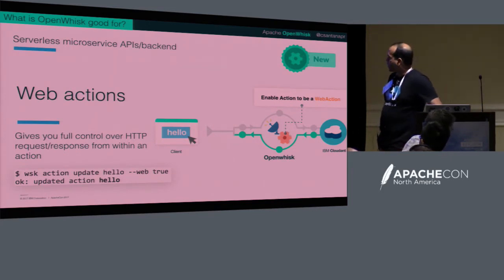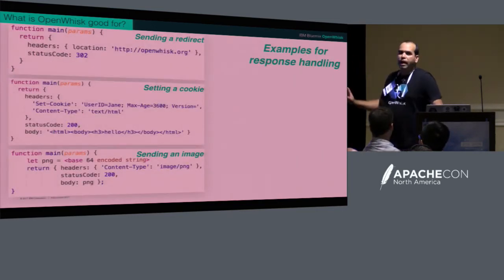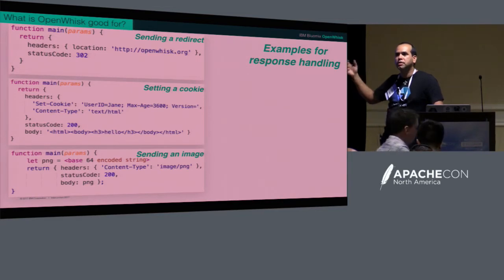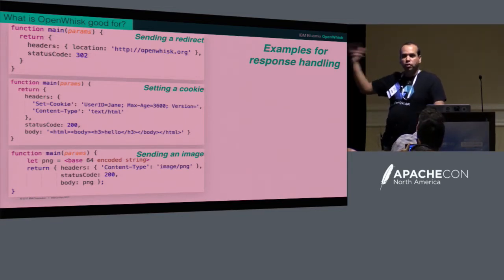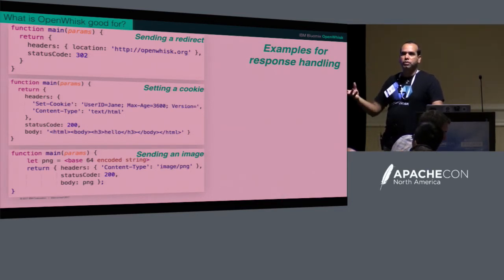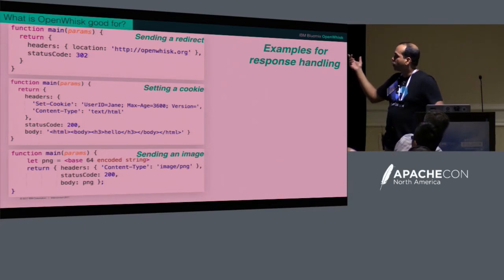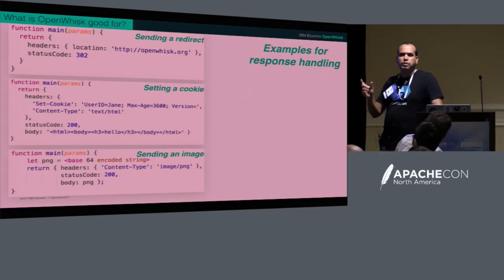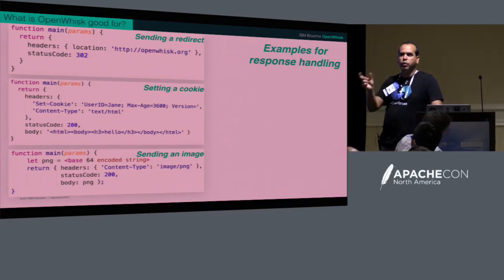Inside the web action, as a web developer, you finally see a web server. You have access to the request, headers, and body — basically everything you need for HTTP. You can control the response: return a 302 or 301 redirect, return HTML with a cookie, or just return JSON. This is where folks were asking how to do a web server with serverless — basically using web actions where you have full control of the HTTP request and response.